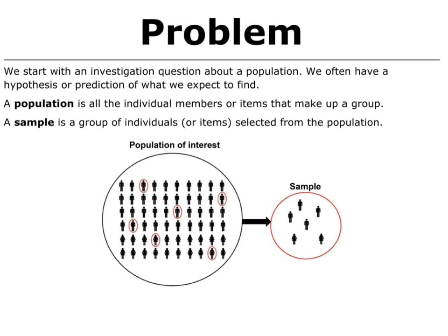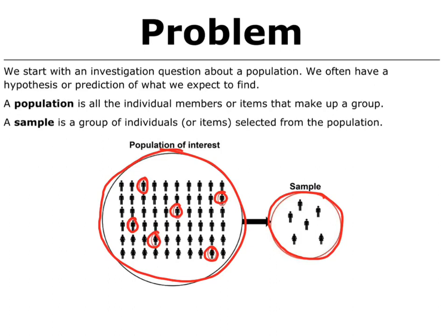Now with the population — the population is everybody that you are interested in. In the diagram here, we've got our total population of interest in this circle, and you can see there are individuals within this population that have been selected. There are a number of different ways of selecting them, but they've been selected and that forms a sample. So a sample is a small set of people in the total group that you're interested in.